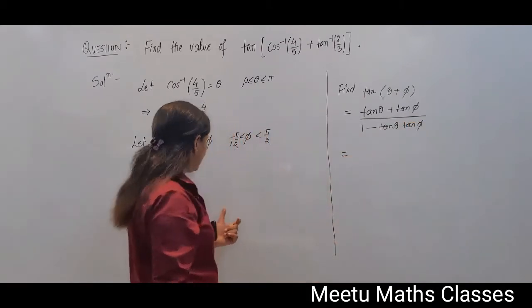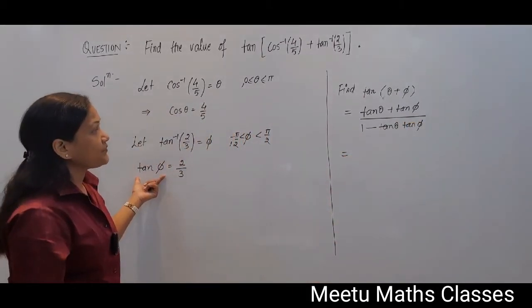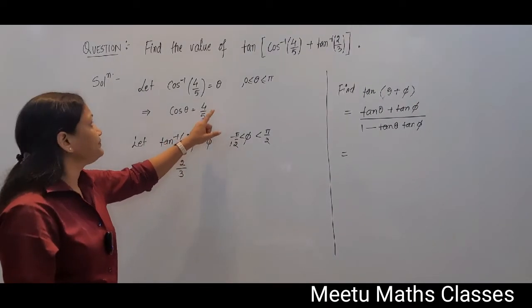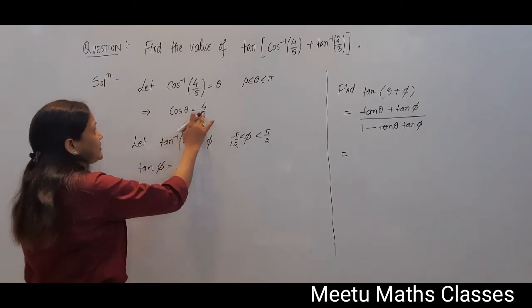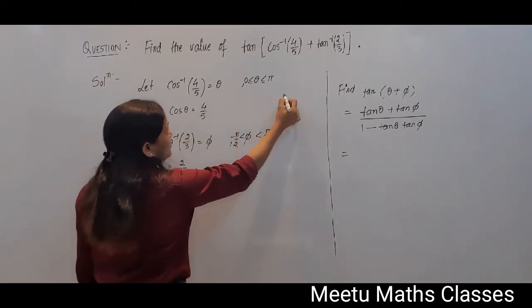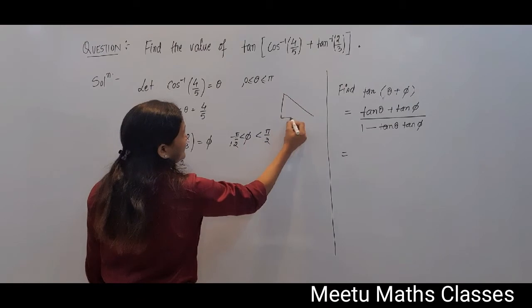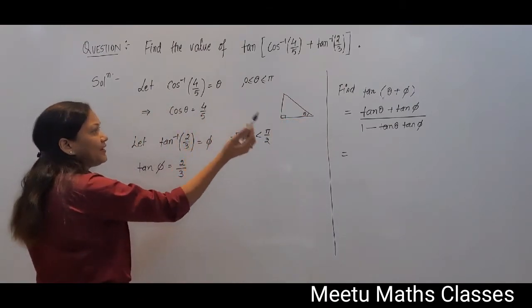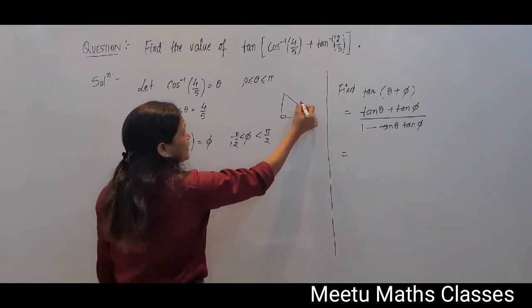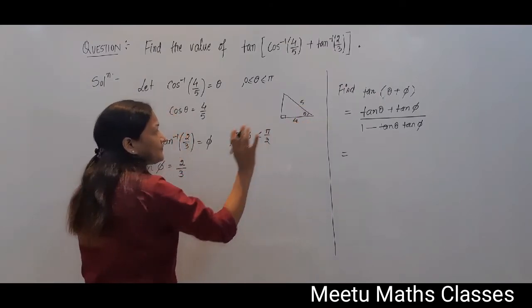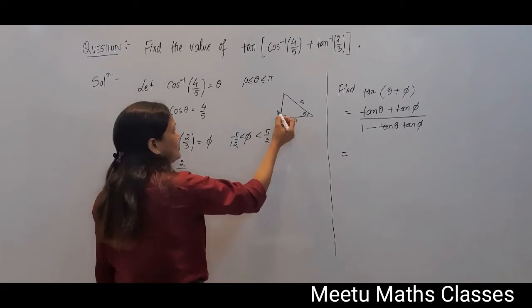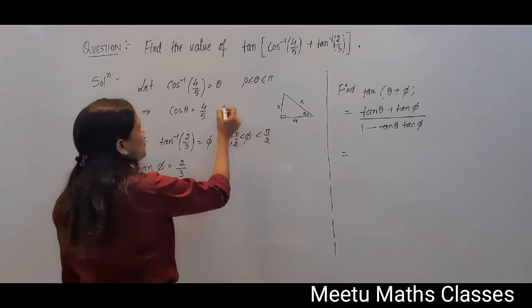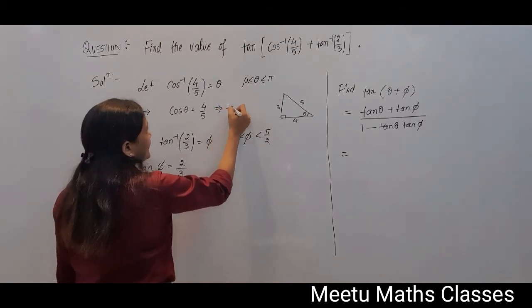Now we already know the value of tan phi, but we have to find the value of tan theta. Now we know that cos theta is 4 by 5. Make a triangle, a right triangle with acute angle theta. Then cos theta is 4 by 5, that means base is 4 and hypotenuse is 5. By using Pythagoras theorem we can complete this triangle and now we can find out the value of tan theta.